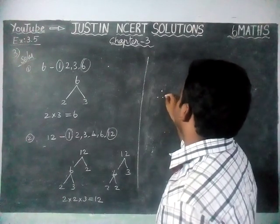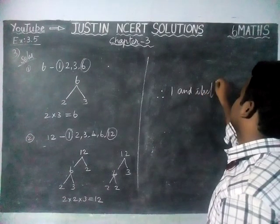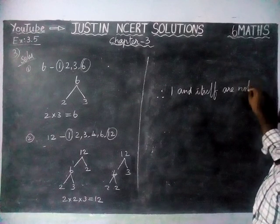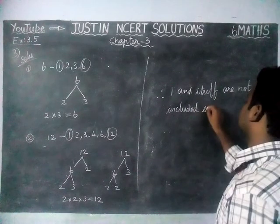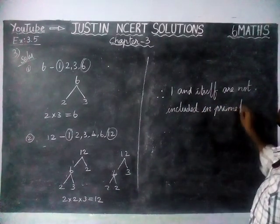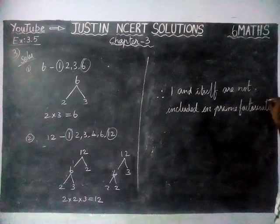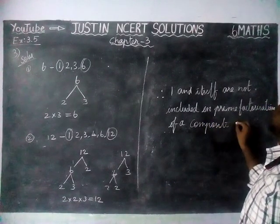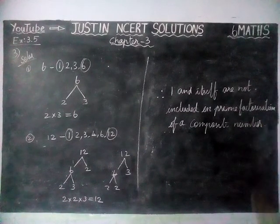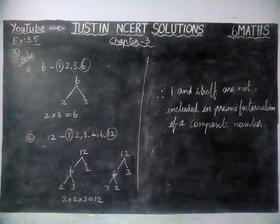Therefore, 1 and itself are not included in the prime factorization of a composite number. That's all, students. Kindly give your suggestions in the comments box, share this video with your friends, and subscribe to our channel. Thank you.